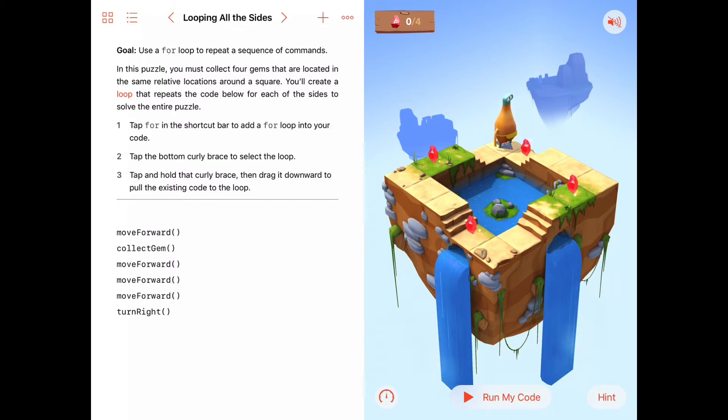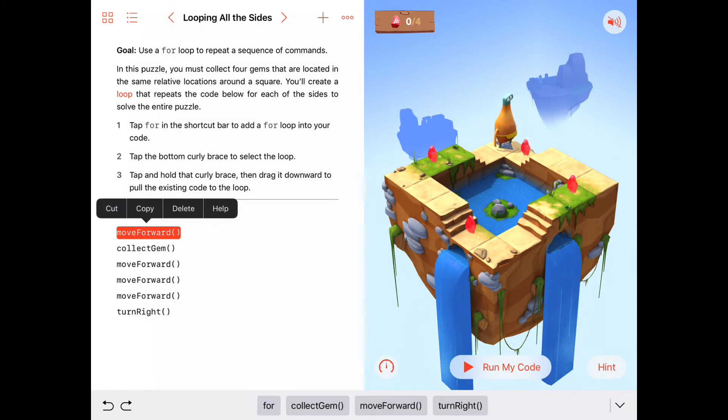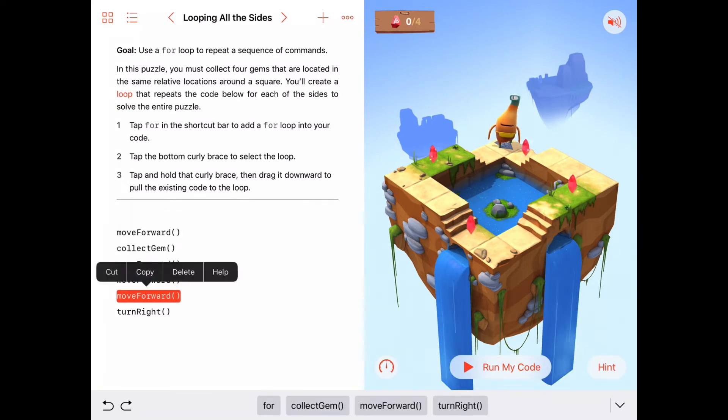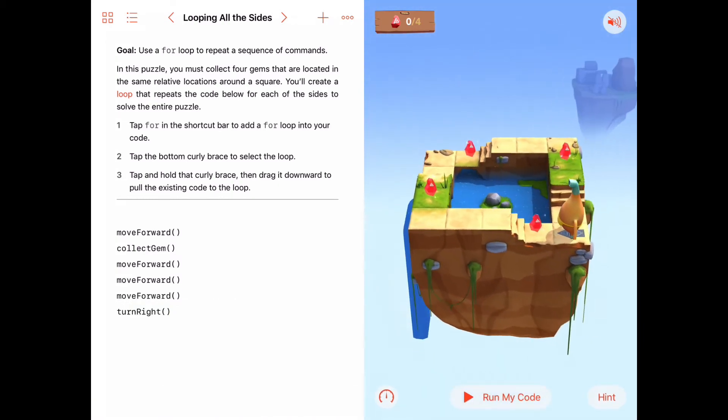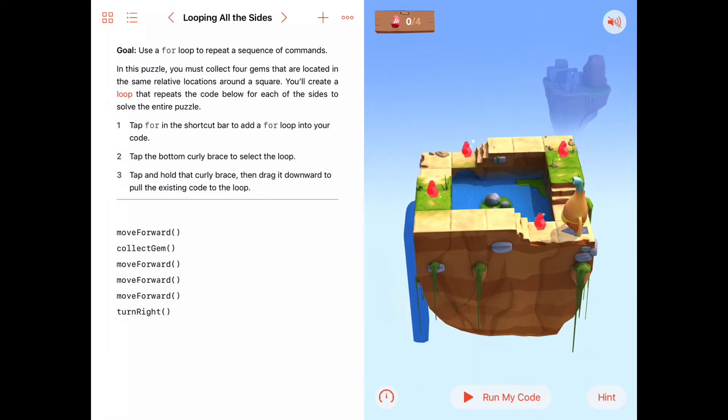The goal is to use a for loop to repeat a sequence of commands. And we've got a sequence of commands given to us here: a move forward, collect gem, move forward, move forward, move forward, and turn right. So let's go ahead and run this sequence of commands and watch what Byte does here. So as we go along, here's our move forward, collect gem, three move forwards, move forward, move forward, move forward, and a turn right. Okay.